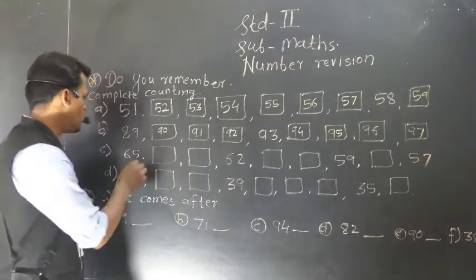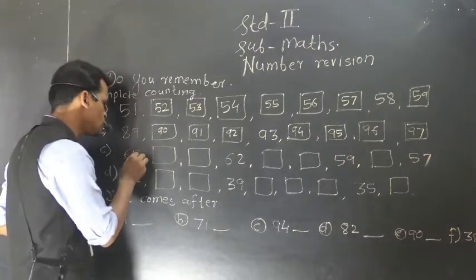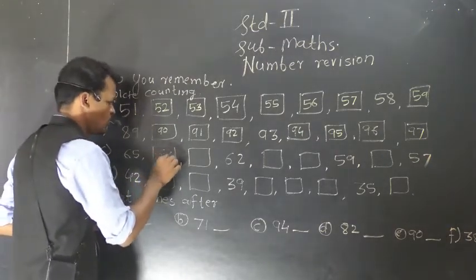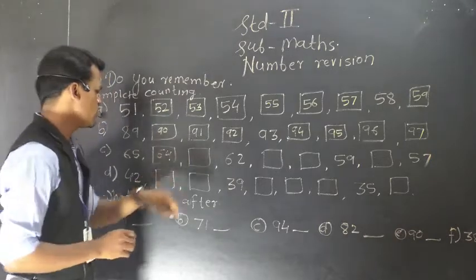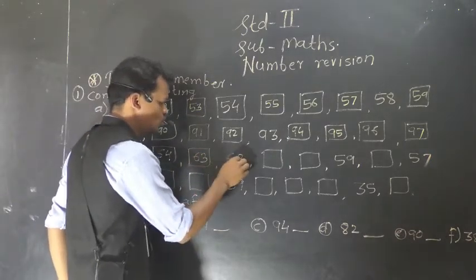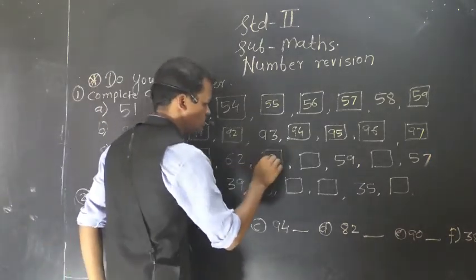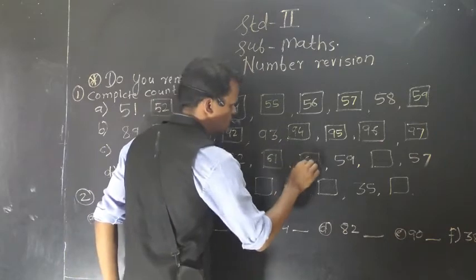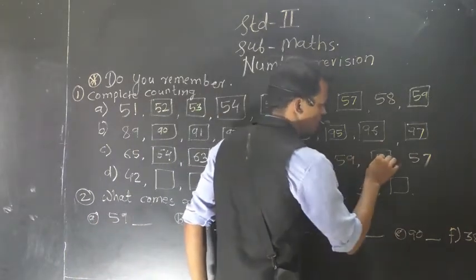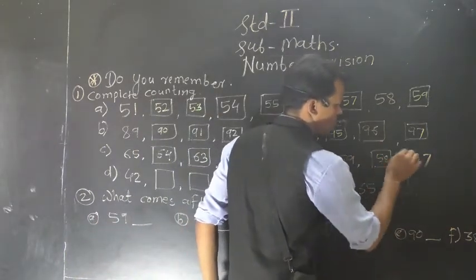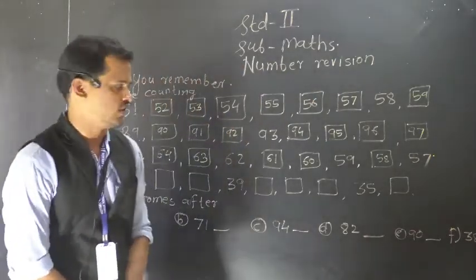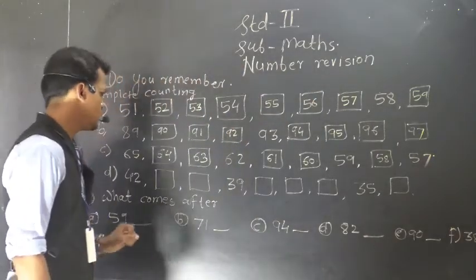So backward counting. So before 65: 64, 63, 62, 61, 60, 59, 58 — and 57 is already given.